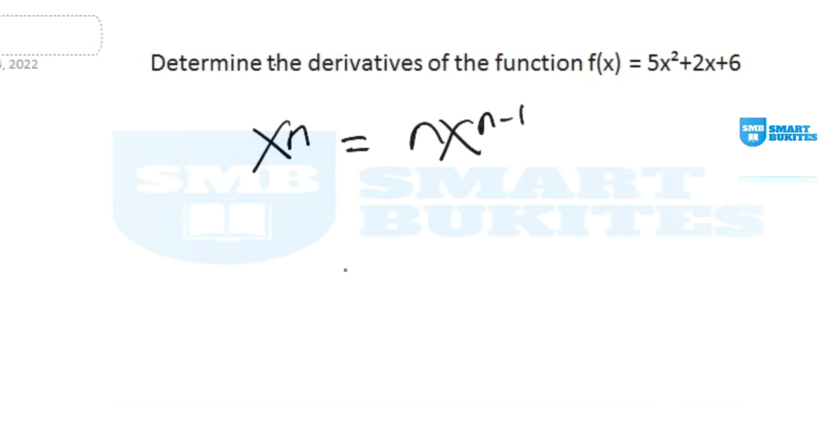And another rule is the derivative of a constant function is zero. For example, the constant function might be number 6 or number 10, or any number which doesn't have the variable x attached to it. This is called a constant function. So now we can go and find the derivative of our function.